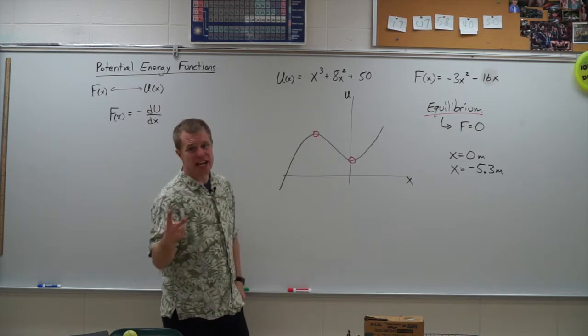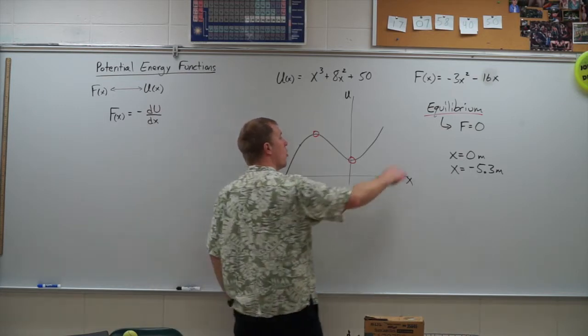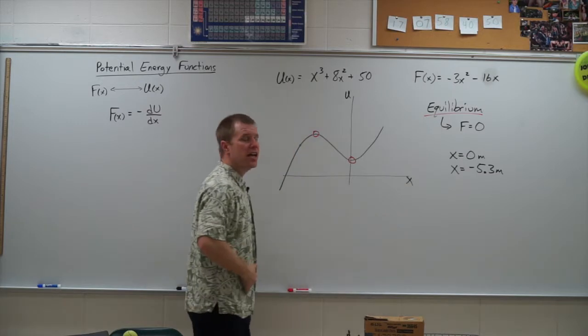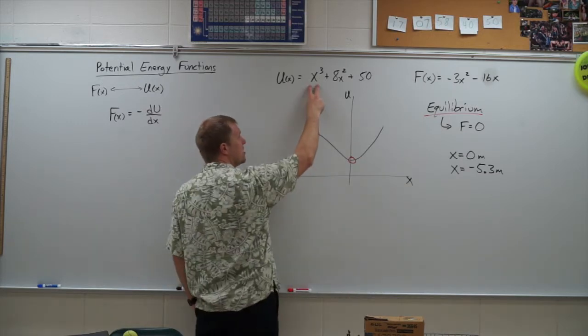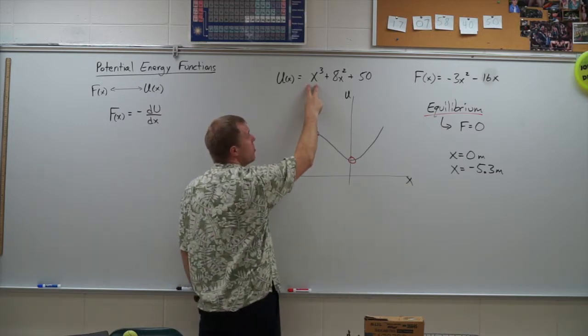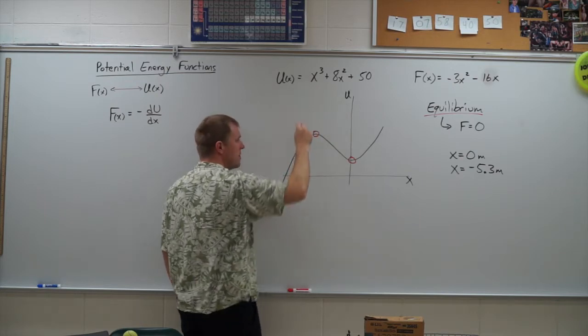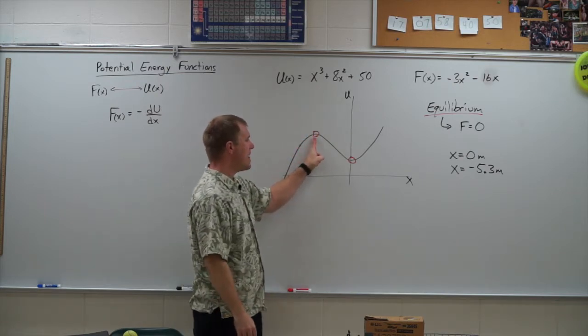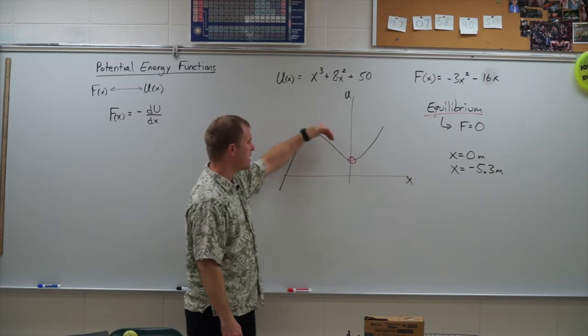Your second option is to, ignoring this first derivative you took, take the second derivative of your potential energy function and decide at these two equilibrium points if it's concave down or concave up.